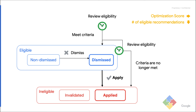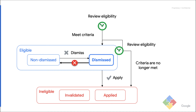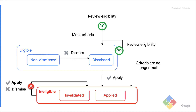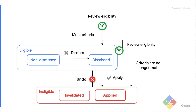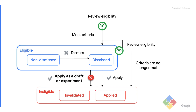Let me clarify a few things that are impossible to do today with recommendations. A dismissed recommendation cannot be undismissed. Taking actions on ineligible recommendations will always fail. The best practice is to take actions on recommendations as soon as possible after retrieving them — the longer the wait, the more chance there is to end up with failures because of an invalidation or concurrent apply. It's impossible to undo an applied recommendation using the recommendation service. And last, it is impossible to apply a recommendation as a draft or as an experiment using the recommendation service.